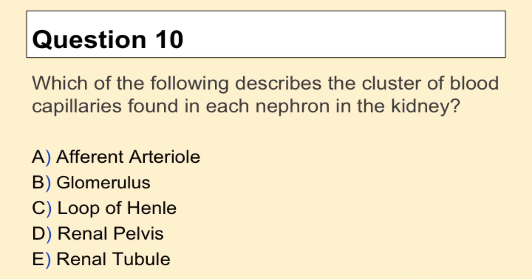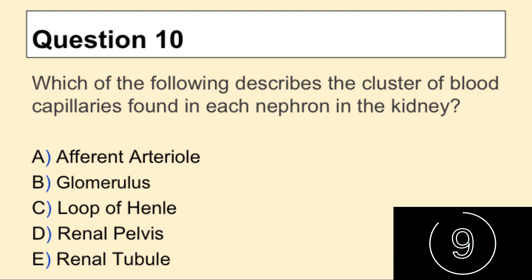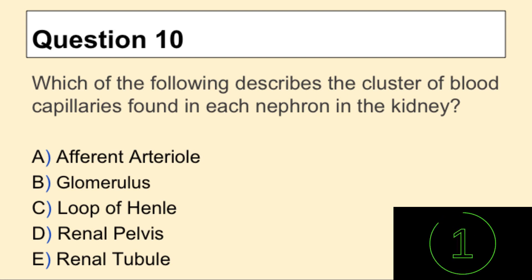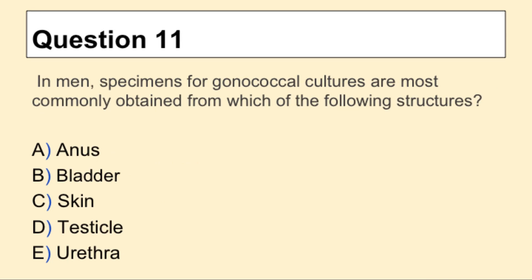Question 10: Which of the following describes the cluster of blood capillaries found in each nephron in the kidney? Question 11: In men, specimens for gonococcal cultures are most commonly obtained from which of the following structures?